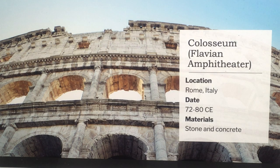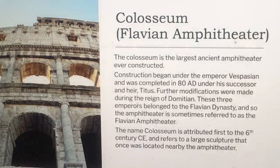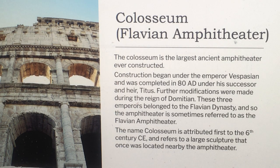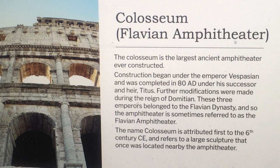This is the Colosseum, the Flavian Amphitheater, located in Rome, made of stone and concrete, 72 to 80 CE. It's the largest ancient amphitheater ever constructed. Construction began under Emperor Vespasian and was completed in 80 CE under his successor and heir, Titus. Further modifications were made during the reign of Domitian. These three emperors belonged to the Flavian dynasty, which is why it's sometimes referred to as the Flavian Amphitheater. The name Colosseum is attributed to the 6th century CE and refers to a large sculpture that once was located near the amphitheater.